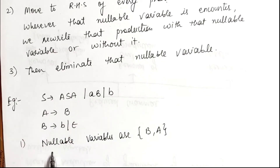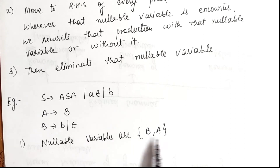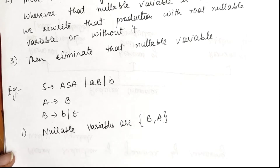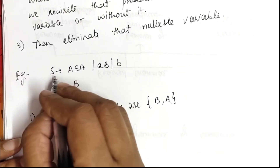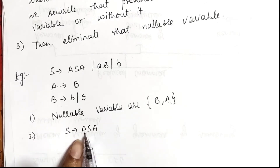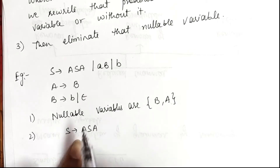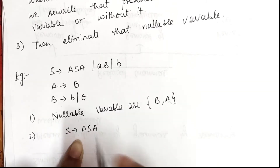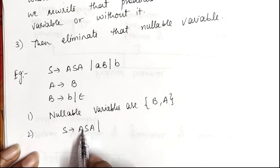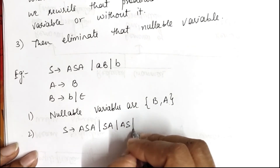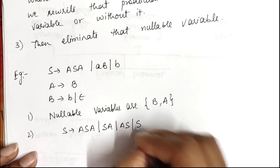For this particular grammar, the nullable variables — directly or indirectly — are A and B. Now we move to the right hand side of every production. For S derives A S A: two A's are encountered. We rewrite with nullable variable or without it. Substituting the first A as epsilon gives S A; substituting the second A as epsilon gives A S; substituting both A's as epsilon gives just S.